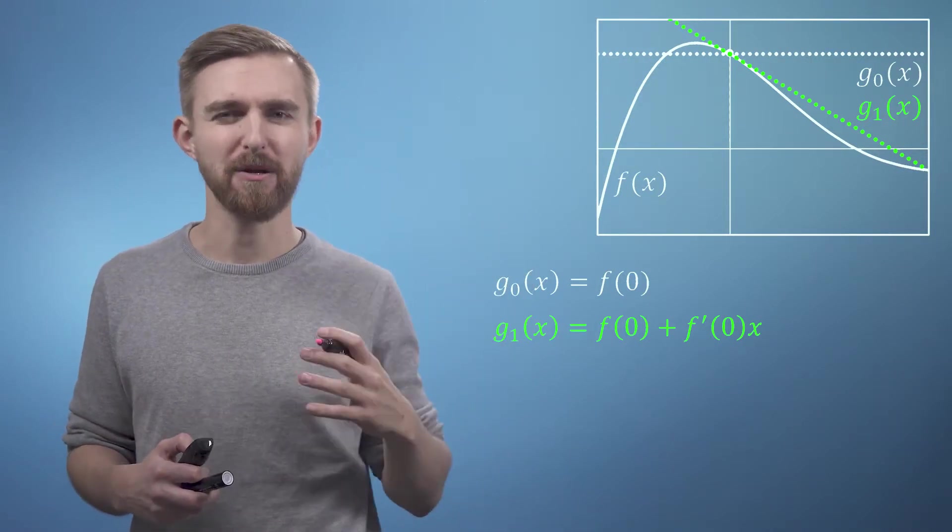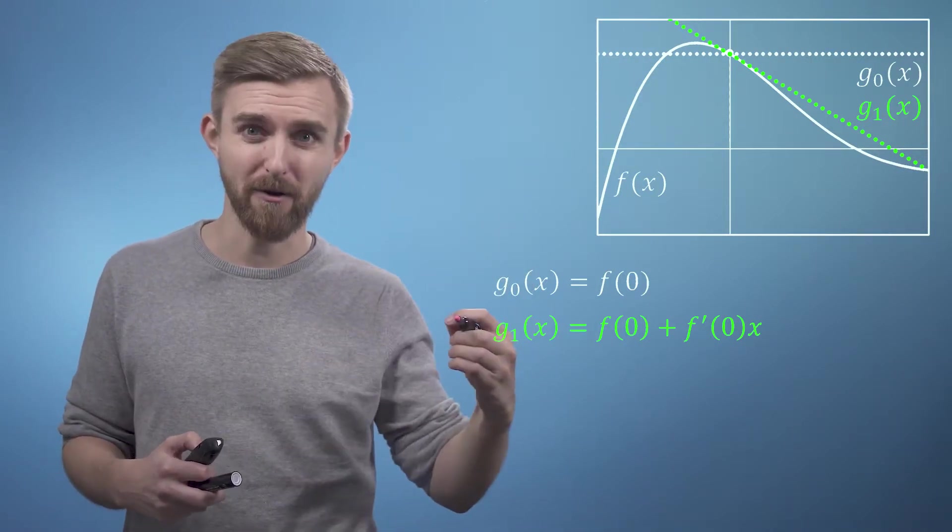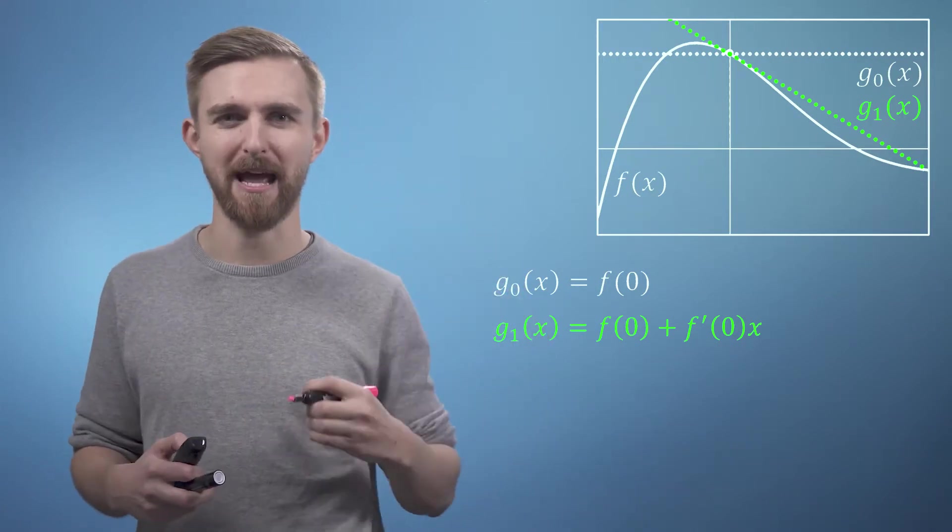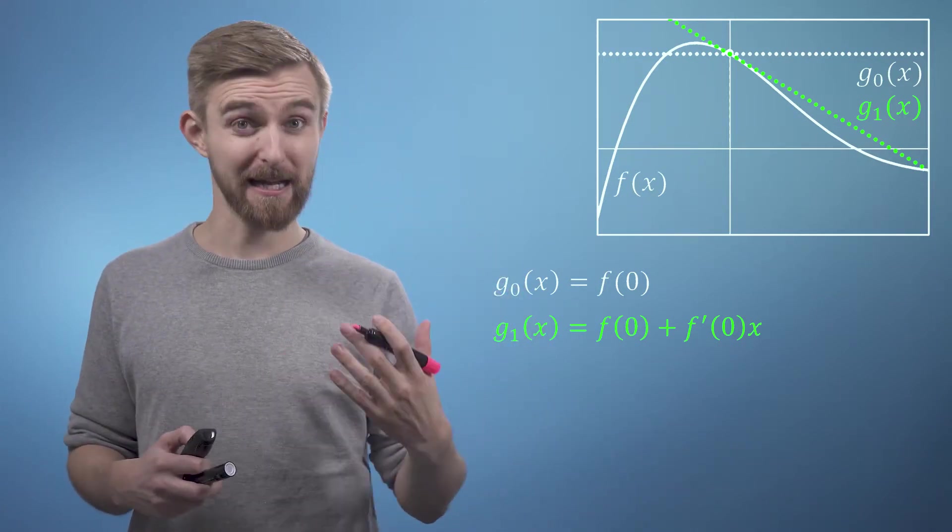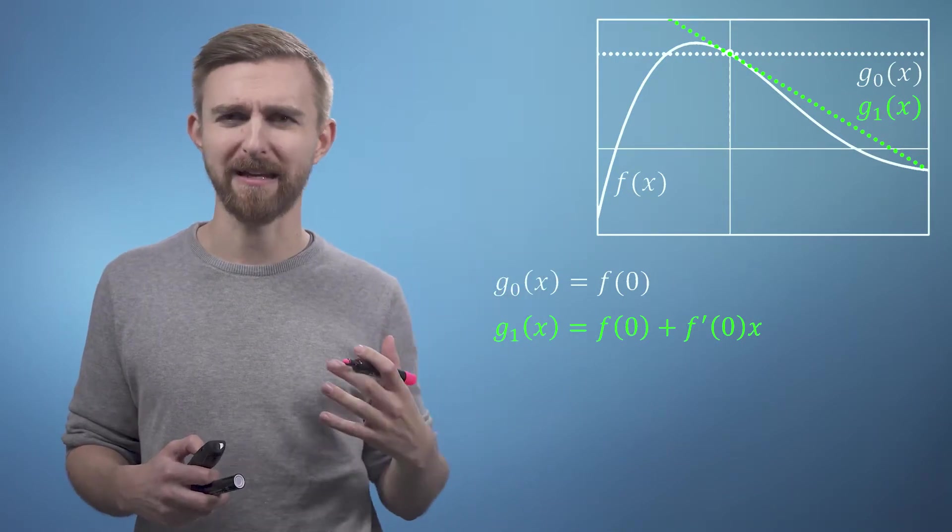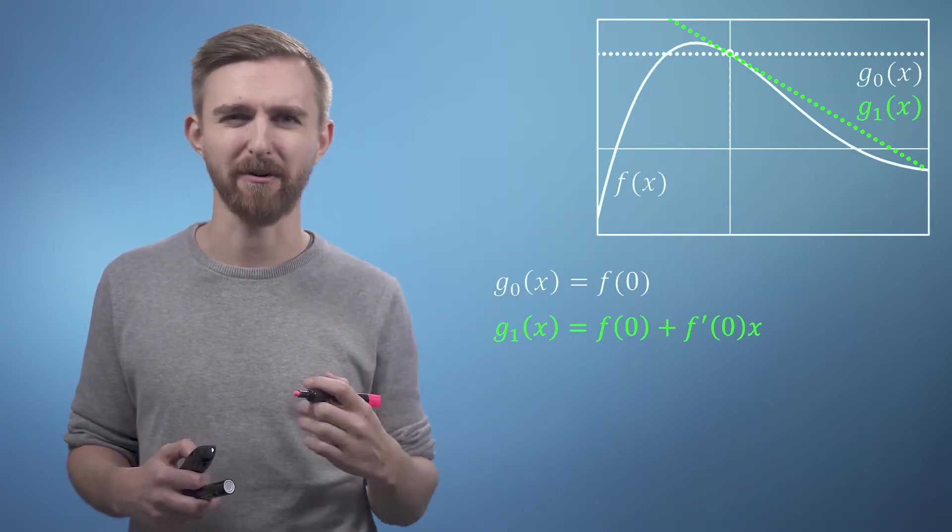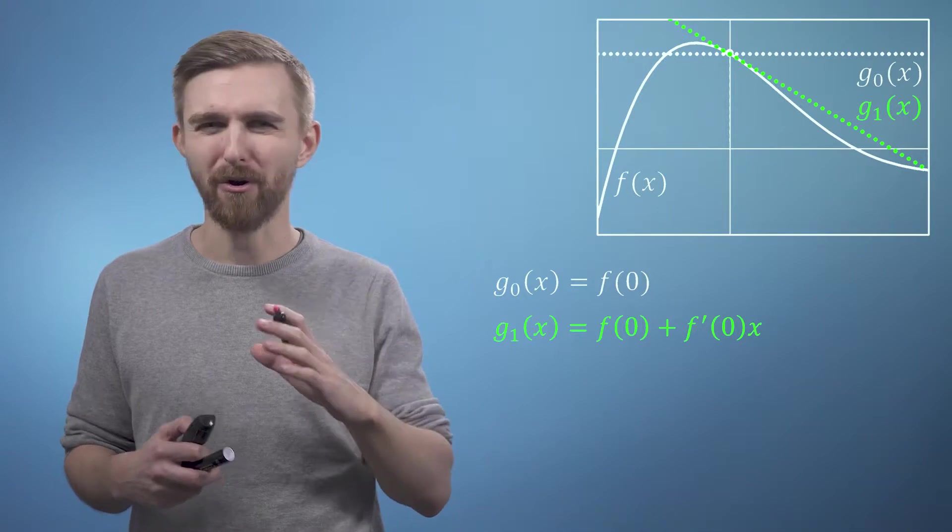Which has the same value of the gradient and of the function f of x. And we can also write down its expression, g1 of x is f of 0, f dash of 0 times x. This thing clearly does a better job than g0 at approximating f of x near the point x equals 0. But it's still not great.